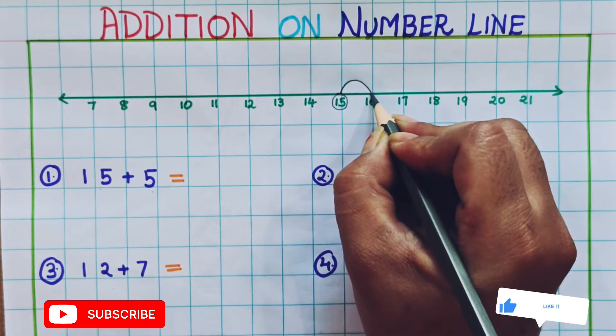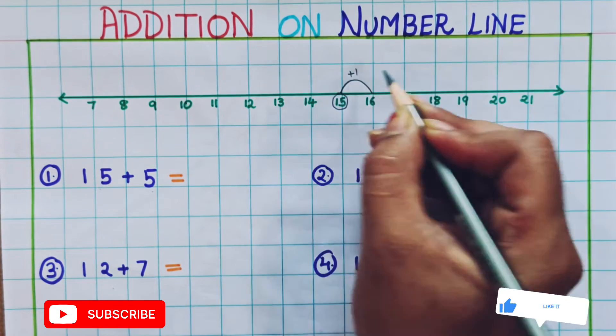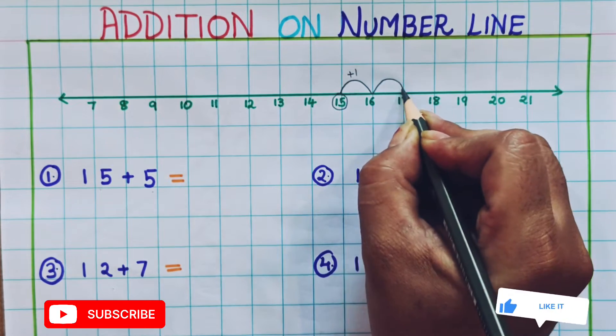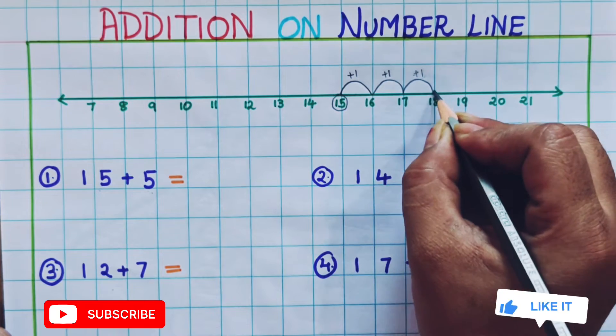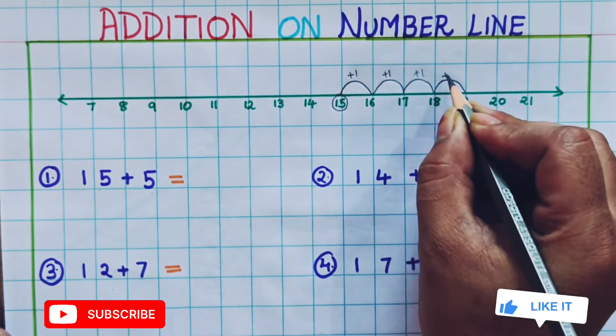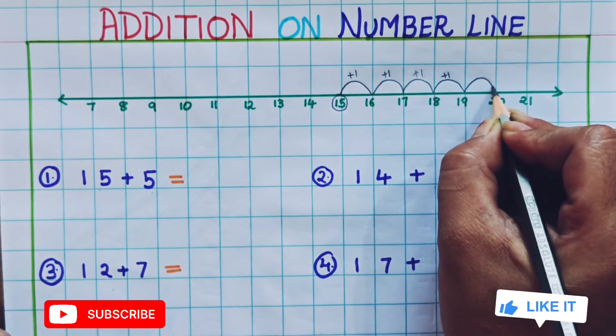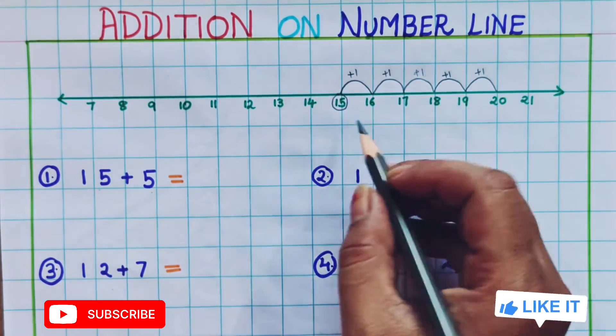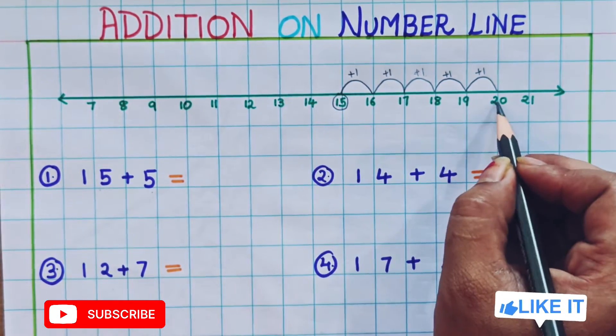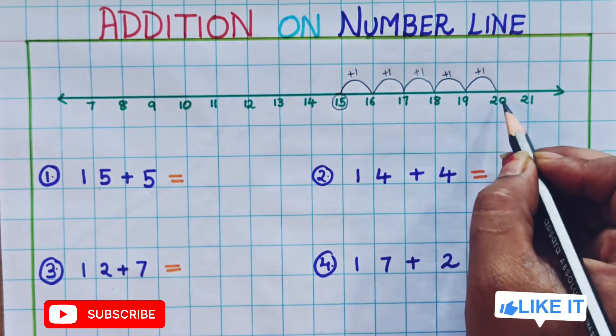This is plus 1. Now this is plus 1, so plus 2. Then plus 3. Plus 4. And plus 5. So 15 plus 5. Which number am I getting? 20.